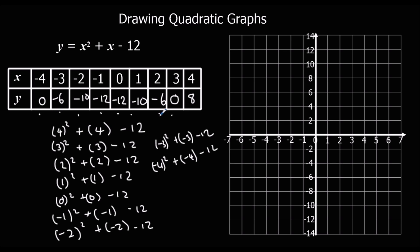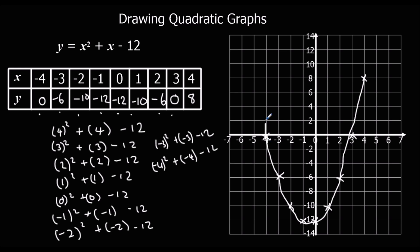So we've got our coordinates: (4, 8), (3, 0), (2, −6), (1, −10), (0, −12), (−1, −12), (−2, −10), (−3, −6), (−4, 0). And again, we've got a nice U-shaped graph. We can draw it going down just below the minimum and back up — a nice parabola.